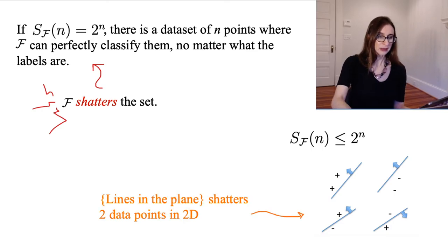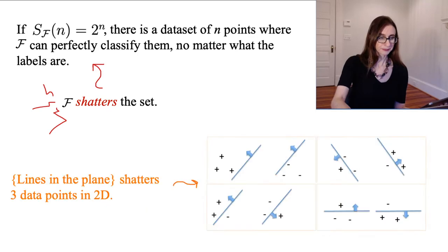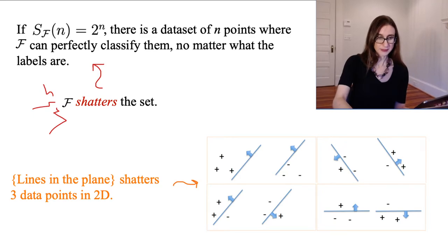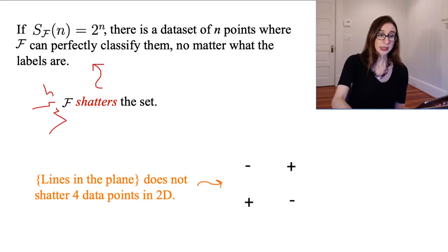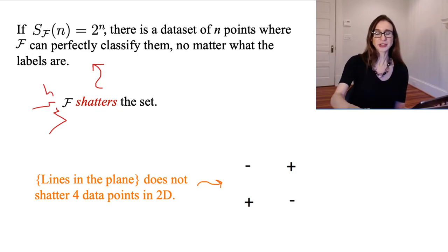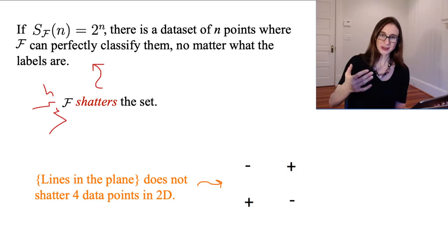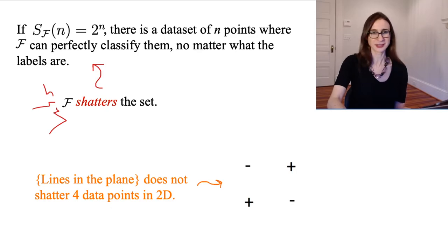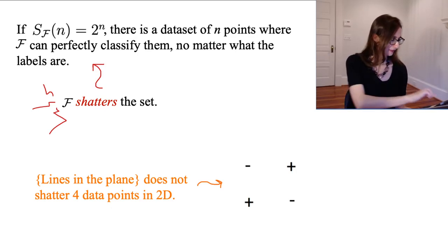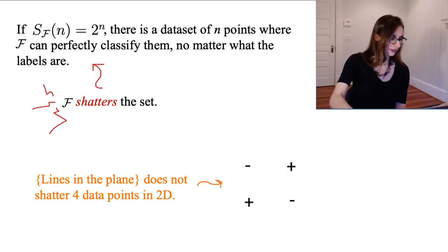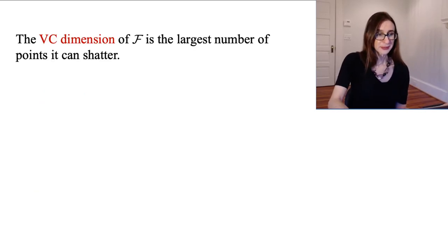The set of lines in the plane can shatter two data points in two dimensions, and that same set of lines in the plane can shatter three data points in two dimensions. However, lines in the plane cannot shatter four points in two dimensions, because there is no configuration of the data for which I can classify using all possible labelings — all 2^4 possible labelings. It can't be done.